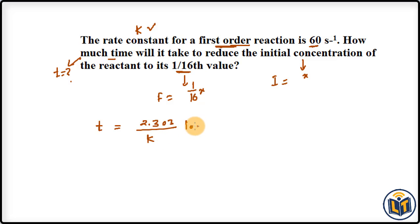initial amount upon final amount. Now we can plug in the values. We have 2.303 upon k, which is 60 per second, so 60 per second, then log of